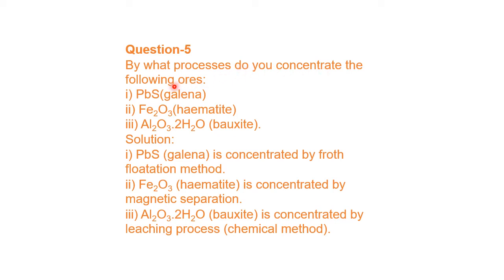Question number five: by what process do you concentrate the following ores — galena, hematite, and bauxite? Galena is a sulfide ore; the best method for sulfide ores is the froth flotation process. Hematite contains iron, which is magnetic, so to separate it from non-magnetic impurities the best method is magnetic separation. Bauxite (Al₂O₃·2H₂O) has impurities chemically associated with it, so a special chemical method — the leaching process — is used to concentrate it.